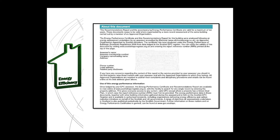Page 5 of the EPC contains the contact details of the energy assessor who surveyed the property and generated the EPC, including the assessor's name, membership number, company trading name and address, as well as phone number and email address. The energy assessor should be contacted if there are any queries relating to the calculation itself or the output displayed on the EPC, and could also be contacted should the homeowner wish to update their EPC following any improvement works.